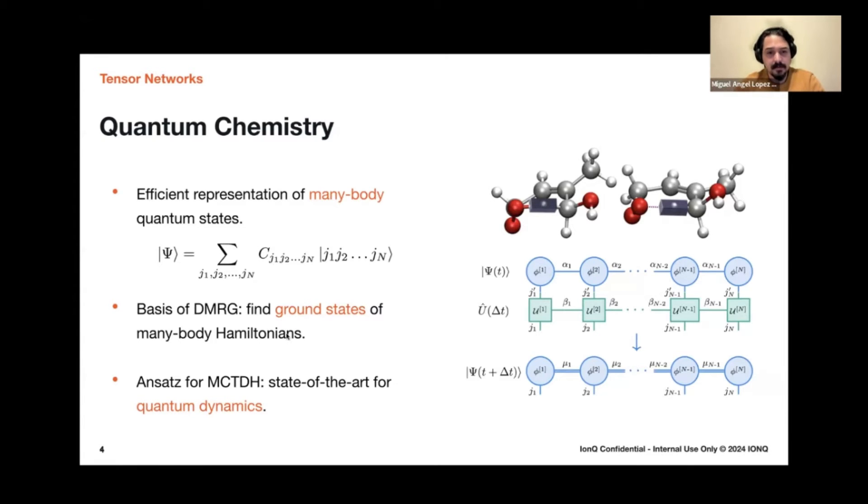They have been studied for a while. So there's this very famous algorithm called DMRG that computes ground states for many body Hamiltonians. And the basis of that algorithm is a tensor network starting point. Also for quantum dynamics, the state of the art method is MCTDH. And some of the ansatzes that you can use for that method is also types of tensor networks. So there are very powerful methods here.